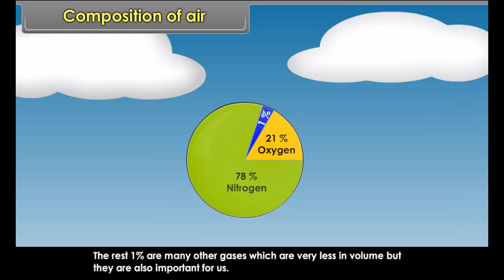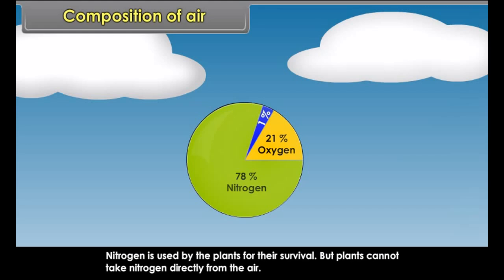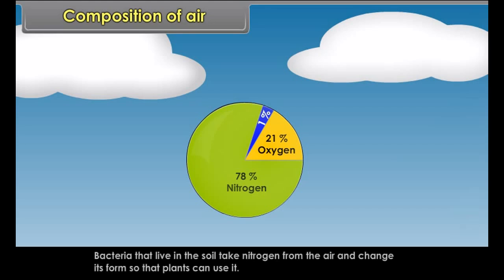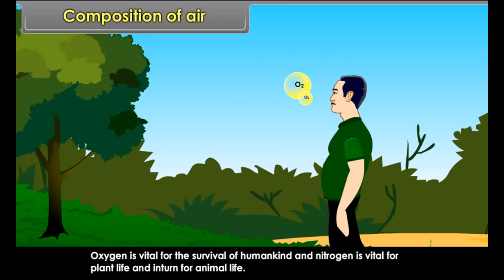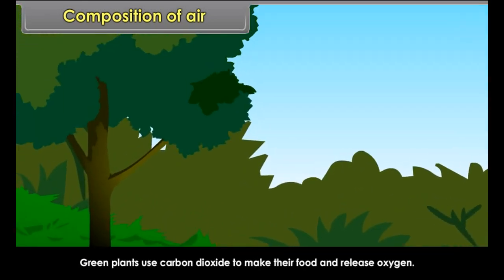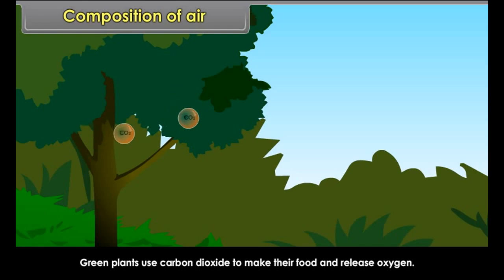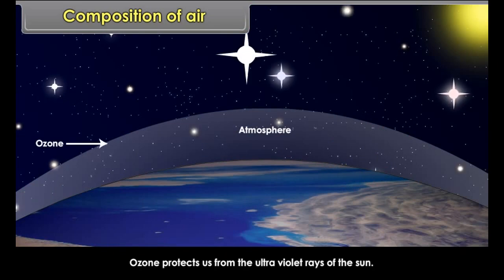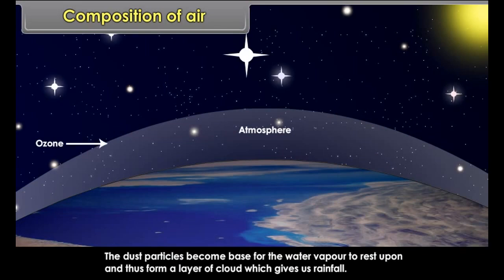The rest 1% are many other gases which are very less in volume, but they are also important for us. Nitrogen is used by the plants for their survival, but plants cannot take nitrogen directly from the air. Bacteria that live in the soil take nitrogen from the air and change its form so that plants can use it. Oxygen is vital for the survival of humankind and nitrogen is vital for plant life and in turn for animal life. Green plants use carbon dioxide to make their food and release oxygen. Ozone protects us from the ultraviolet rays of the sun. The dust particles become a base for water vapour to rest upon and thus form a layer of cloud which gives us rainfall.